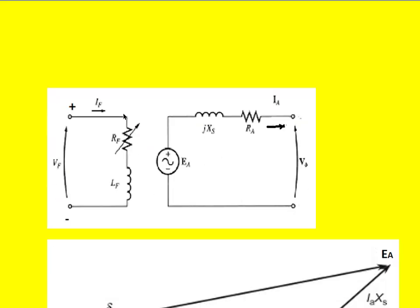If you draw the equivalent circuit of the synchronous generator per phase, you get this. This is the rotor winding connected to the DC supply; the supply current flows through the rotor field winding, which has inductance LF and resistance RF. In the laboratory there is a provision to externally change the resistance of the field winding. This is the stator equivalent circuit: EA is the induced EMF per phase in the stator, XS is the synchronous reactance, and RA is the resistance of the stator per phase.